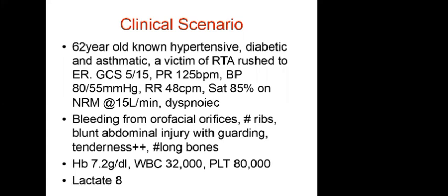A clinical scenario: a 62-year-old hypertensive, diabetic, and asthmatic patient, victim of a road traffic accident, brought to the emergency room. GCS was 5/15; tachycardic at 125 bpm; hypotensive; saturating at 85% despite a non-rebreather mask at 15 L/min; and dyspneic. Examination showed bleeding from orofacial orifices, fractured ribs, abdominal guarding and tenderness, and lacerations. Labs showed anemia (Hb 7.2), leukocytosis, lymphocytopenia, and elevated lactate. This patient clearly needs critical care.